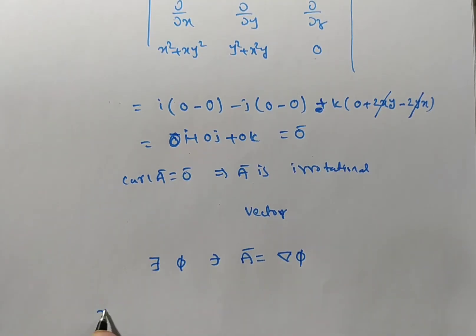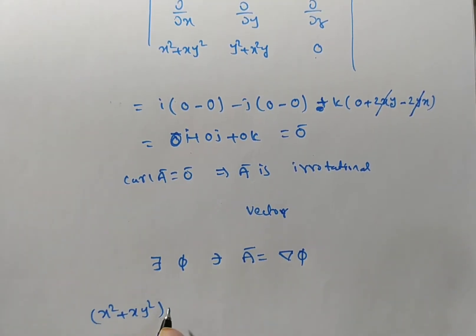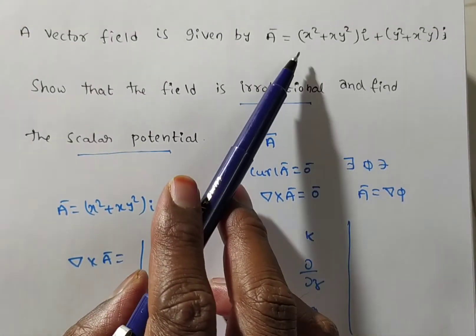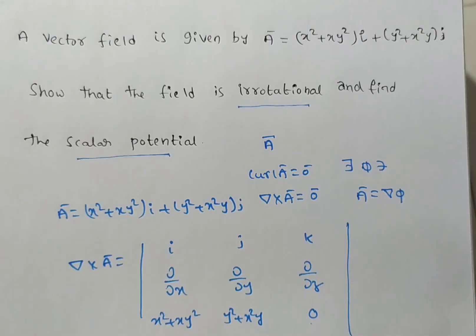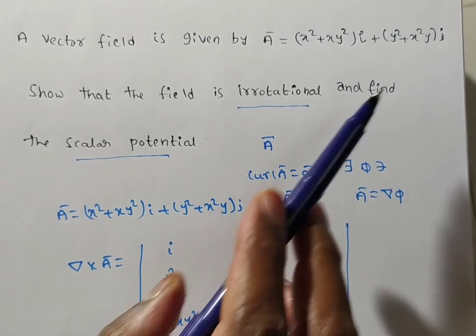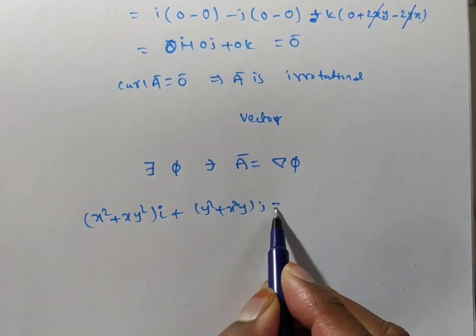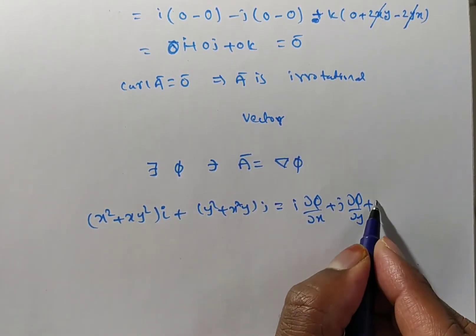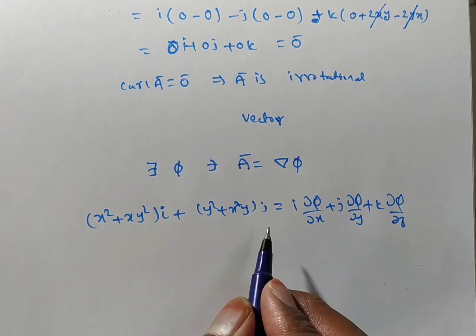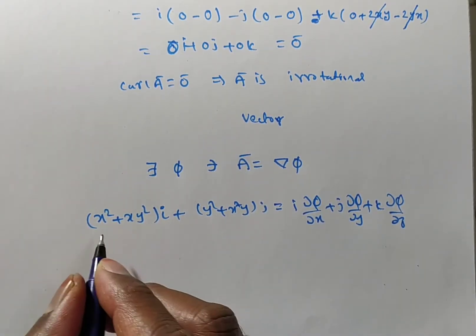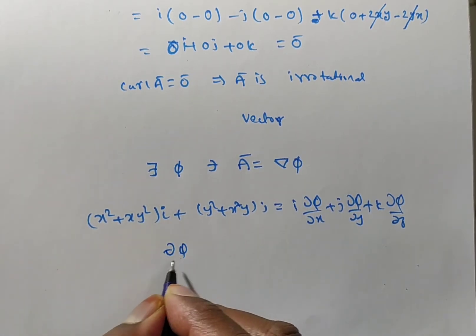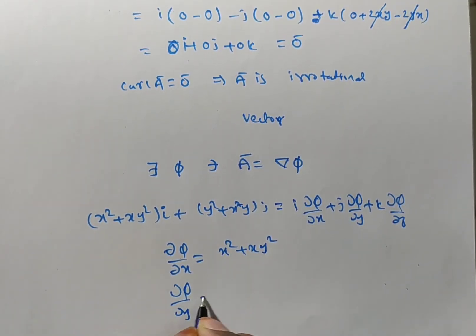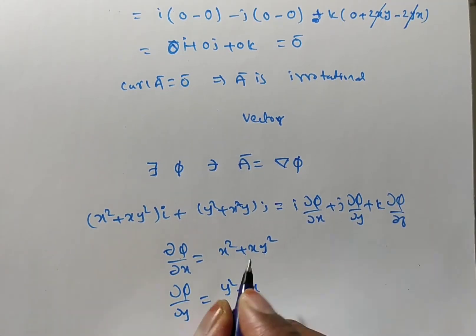A bar equals del φ. A bar is (x² + xy²)i + (y² + x²y)j, and del φ equals i·(∂φ/∂x) + j·(∂φ/∂y) + k·(∂φ/∂z). Comparing both sides: ∂φ/∂x = x² + xy², ∂φ/∂y = y² + x²y, and ∂φ/∂z = 0 (since there is no k-term).